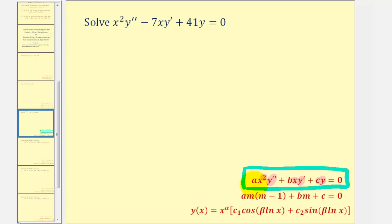Because we have a second order Cauchy-Euler differential equation, we can solve it using the auxiliary equation, where the values of a, b, and c come from the differential equation. The nature of solutions to this quadratic will affect the form of the general solution.